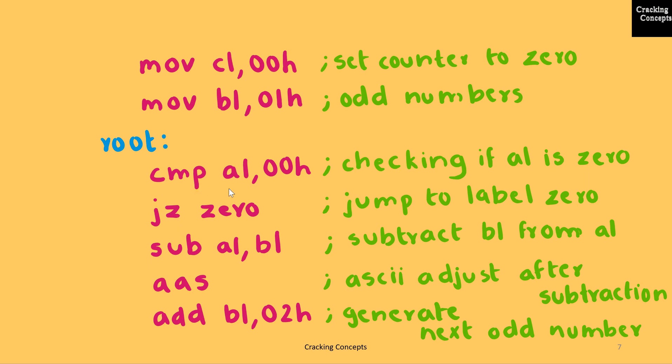This is because COMPARE is an instruction which is similar to subtraction, but there won't be any result stored. Instead, the calculation will bring in some changes in the flag register values. That is why we are checking the value of zero flag to know if the register AL is containing the value 0. If it is not 0, we'll perform a subtraction between AL and BL. BL is where the odd numbers are generated. Immediately after the subtraction, we'll perform ASCII adjust after subtraction.